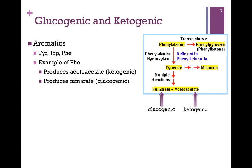Aromatic amino acids, such as tyrosine, tryptophan, and phenylalanine, are both glucogenic and ketogenic. Let's look at the example of phenylalanine. The breakdown products include fumarate and acetoacetate. Fumarate is a citric acid cycle intermediate and therefore glucogenic. Acetoacetate is the first product in ketogenesis and is therefore ketogenic.